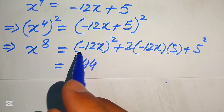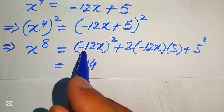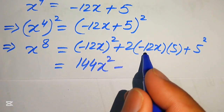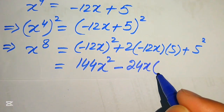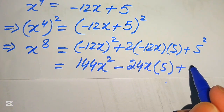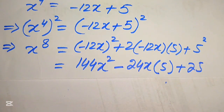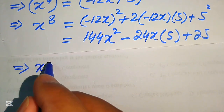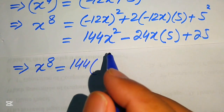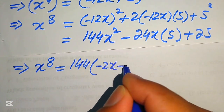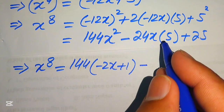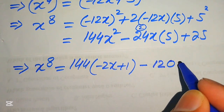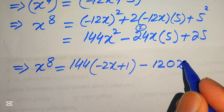Since we have an even power of a negative base, it becomes positive: 144x squared. Then 2 times 12 gives minus 24x, multiplied by 5 gives minus 120x, and 5 squared equals 25. So x to the power of 8 equals 144x squared minus 120x plus 25. We now substitute x squared equals minus 2x plus 1, giving 144 times of minus 2x plus 1 minus 120x plus 25.